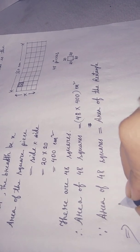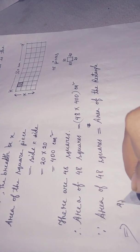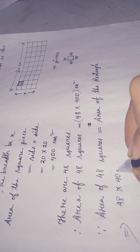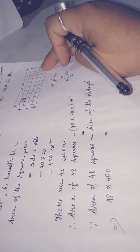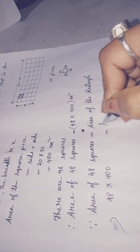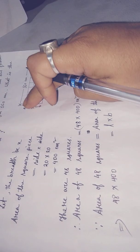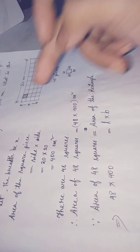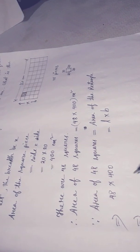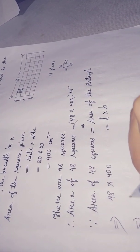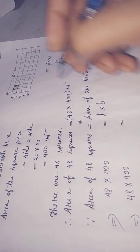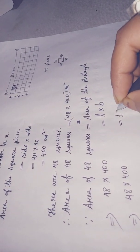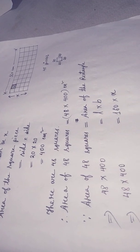Area of 48 squares: 48 into 400. Area formula L into B, length into breadth. 48 into 400 equals length 160 into breadth X.